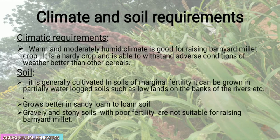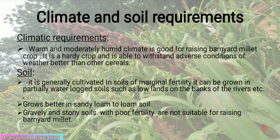Barnyard millet requires a warm and moderately humid climate. It is a hardy crop, able to withstand adverse weather conditions better than other cereals. The soil requirement is of marginal fertility; it can be grown in partially waterlogged soils such as lowlands on the banks of rivers. It grows better in sandy loam to loam soils. Gravelly and stony soils with poor fertility are not suitable for raising barnyard millet.